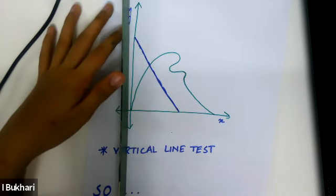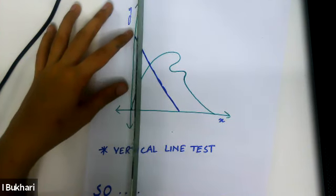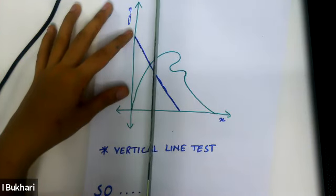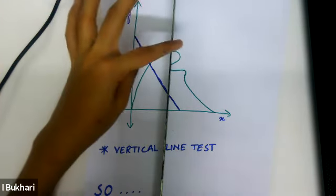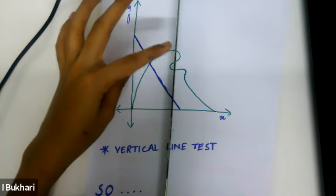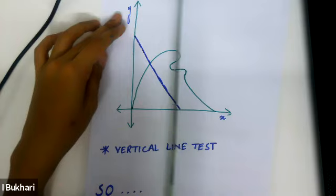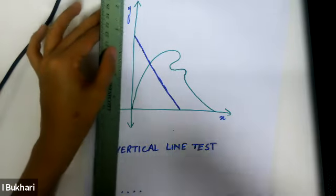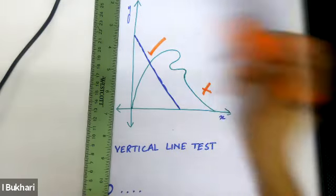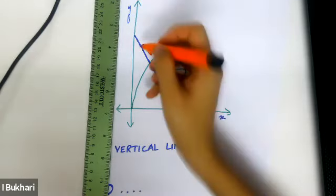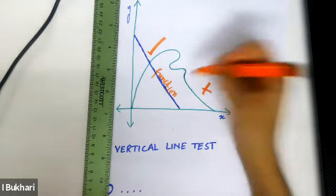For the green line, as I pass the vertical line, it touches at one point up to a certain section — so far so good. But then it touches at two points, then three points. So we know this is not a function; the vertical line test was not cleared. The blue line is a function; the green line is not.